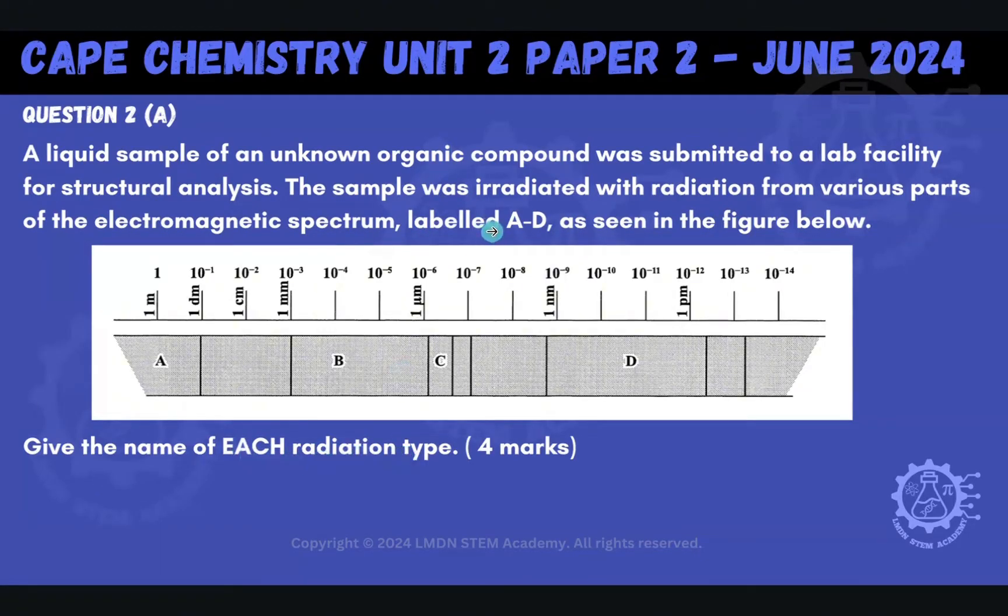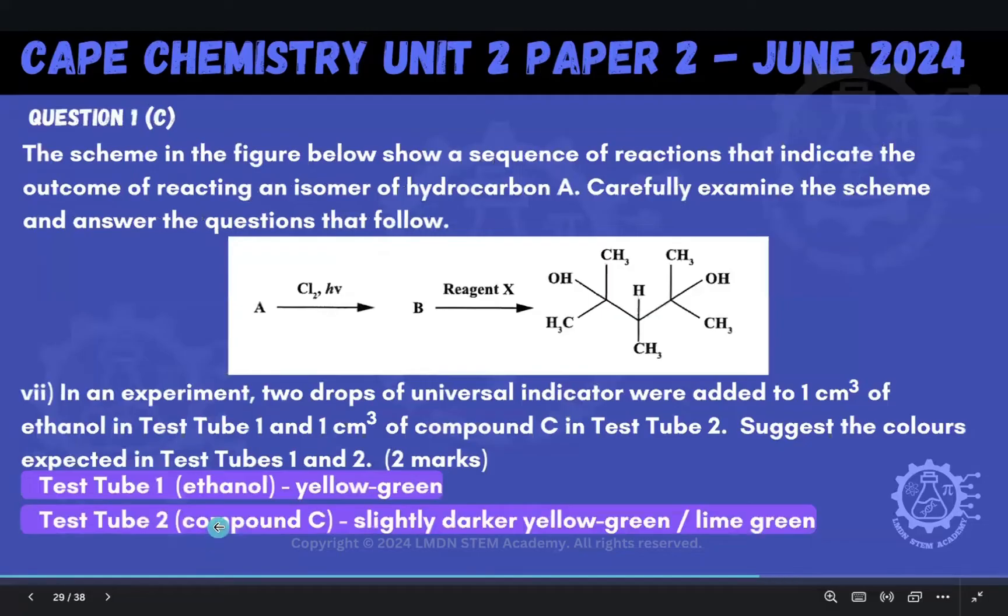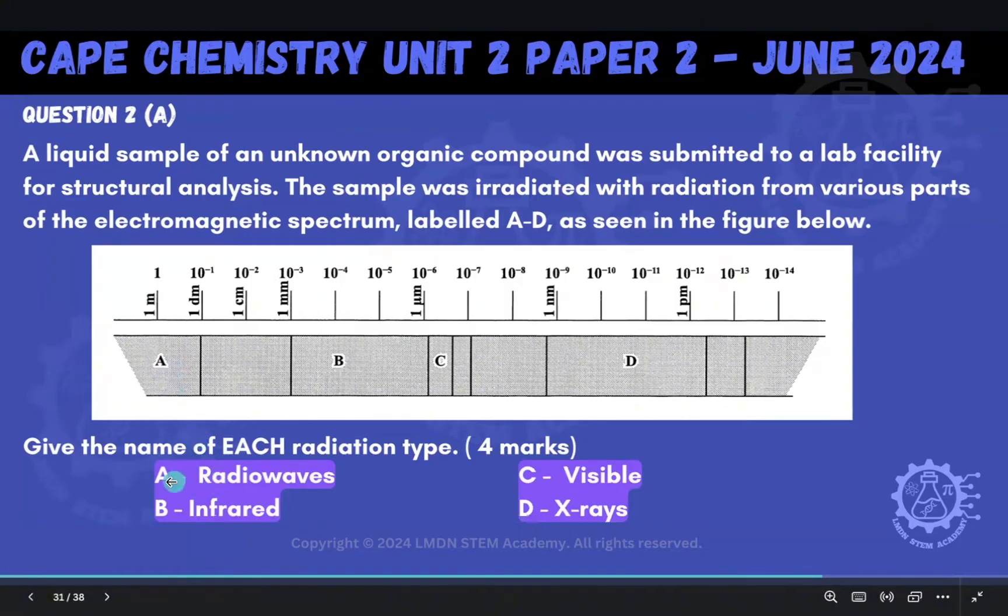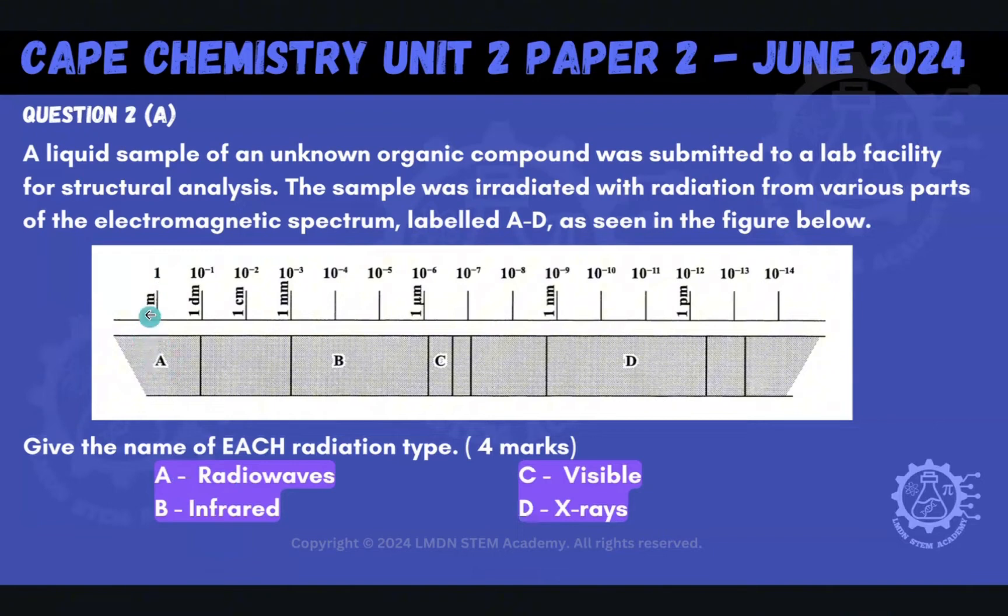They're asking us to name the radiations that have been labeled from A through D. When we look at A, we see that's a very long wavelength region. And so that region here would be our radio waves. Those are the longest wavelength there. You see that that's on the order of 1 meters.